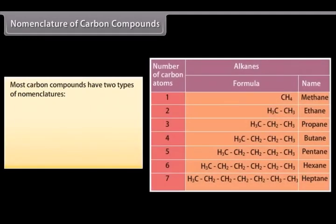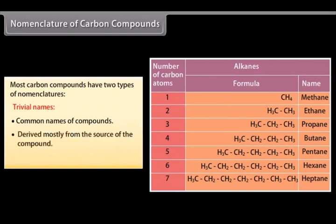Nomenclature. The system of assigning a proper name to a particular carbon compound is called nomenclature. Most carbon compounds have two types of names. Trivial names: Trivial names are the commonly used names of carbon compounds. These are derived mostly from the source of the compound. However, names formed using this manner are ambiguous and repeating.